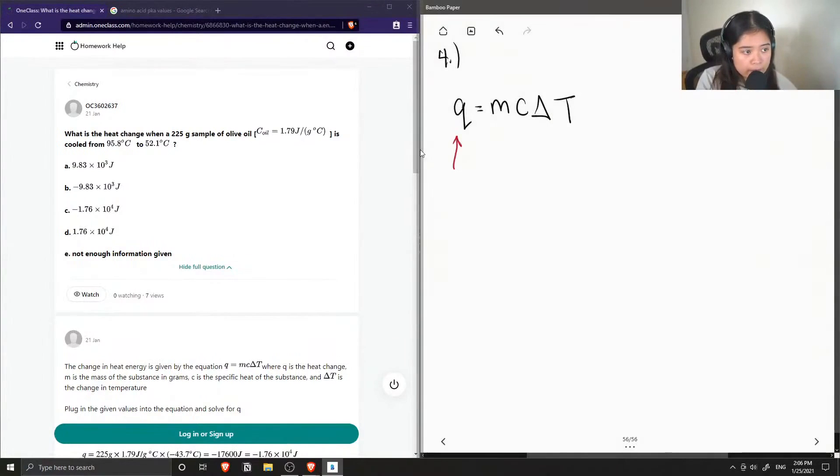So Q is the heat and its units are typically in joules. M is the mass in grams.